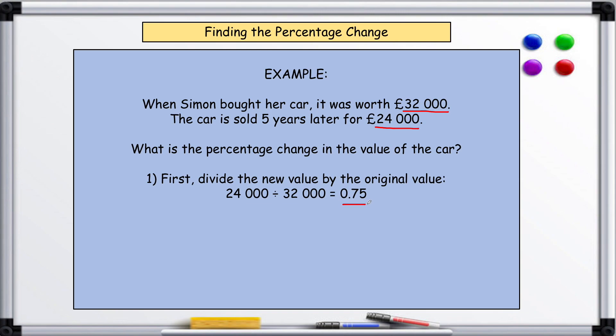And you can guess that that's going to be 75%, but now we just have to work out the difference. So we multiply it by 100 to get 75%.